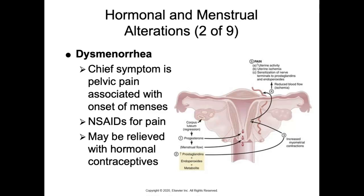NSAIDs such as ibuprofen are the treatment of choice because they reduce COX enzyme activity, which helps reduce prostaglandin production. Hormonal contraceptives can also help control hormone levels, stop ovulation, and create an atrophic endometrium, decreasing prostaglandin synthesis and myometrial contractions. Other holistic options include regular exercise, stress reduction, heat application, acupuncture, TENS units (high-frequency transcutaneous electrical nerve stimulation), and certain supplements — though patients should discuss supplements with their doctor since not all are FDA approved.